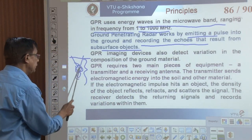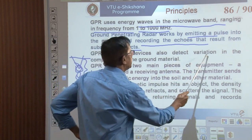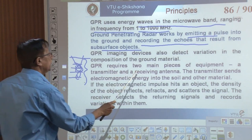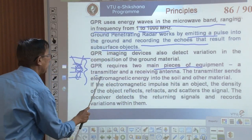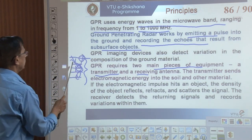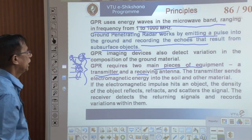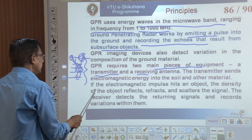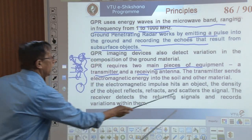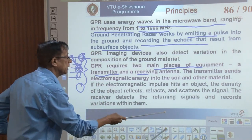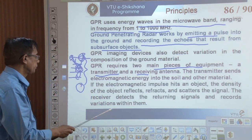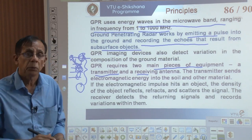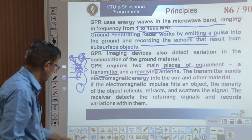Up to 30 meters depth, we can detect anything of interest. GPR imaging also detects variation in the composition of the material with depth. It requires two main components: a transmitter and a receiver. The transmitter sends electromagnetic signals into the soil or ground. If the electromagnetic impulse hits an object, the density of the object reflects, refracts, or scatters the signal depending on the nature of the material. The receiver detects the returned signal and records the variation, allowing us to understand what object is present at a certain depth.